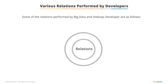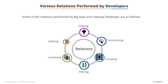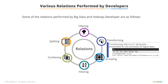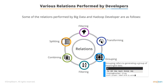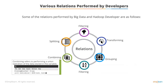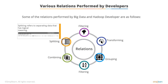Now we will learn some of the relations Big Data and Hadoop developers execute: filtering, transforming, grouping, sorting, combining, and splitting. Filtering refers to filtering data based on a conditional clause, such as grade and pay. Transforming refers to making data presentable to extract analogical data. Grouping refers to generating a group of meaningful data. Sorting refers to arranging the data in ascending or descending order. Combining refers to performing a union operation of data stored in the variable. Splitting refers to separating the data with a logical meaning.